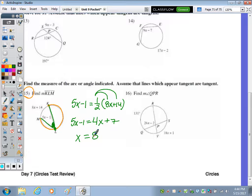So if x is 8, we need to plug it in. 8 times 8 is 64, plus the 14, we get 78. So therefore, if this blue arc is 78 degrees, we need to find the rest of the circle, so we need to subtract it from 360. We're going to borrow. So if I have 10 minus 8 is 2, I need to borrow again. 15 minus 7 is 8, so we get 282 as the measure of KLM.